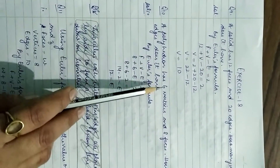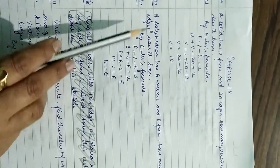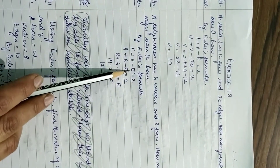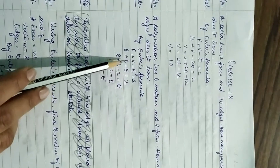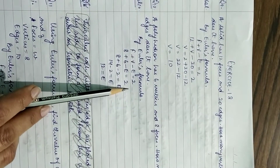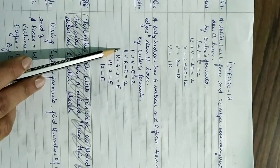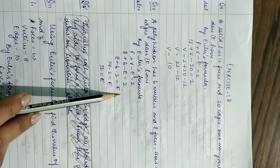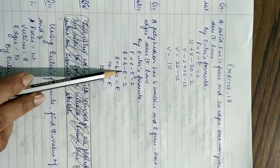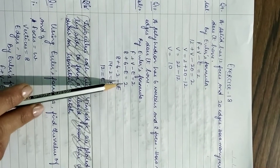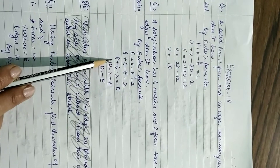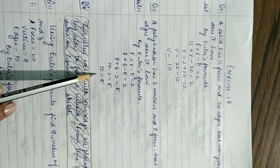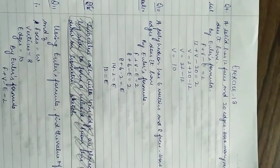Question 10: a polyhedron has 6 vertices and 8 faces — how many edges does it have? Again two values are given, so we use the same formula: Faces + Vertices − Edges = 2, giving 8 + 6 − Edges = 2. Shifting edges to the right and 2 to the left: Edges = 8 + 6 − 2 = 14 − 2 = 12.